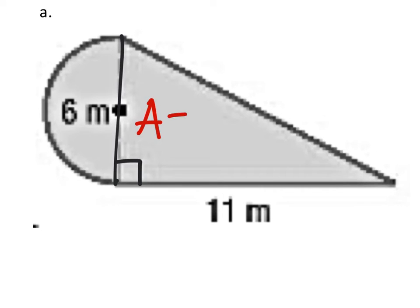So the area of this triangle will be 1/2 times the base times the height, and that gives us 33 square meters.